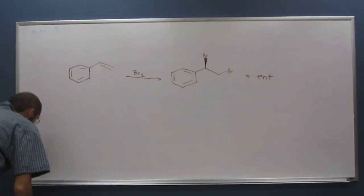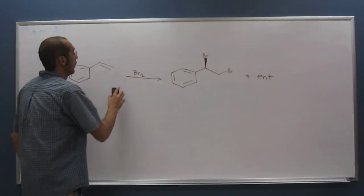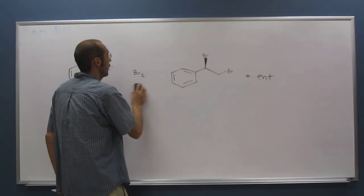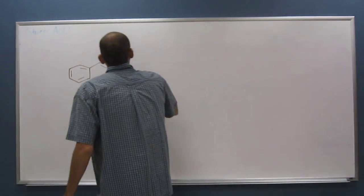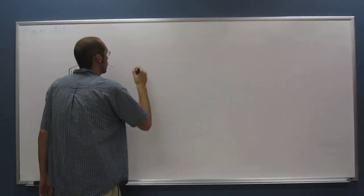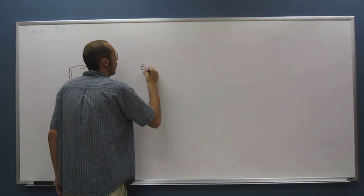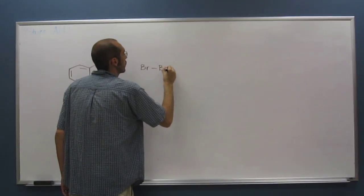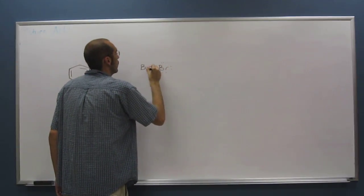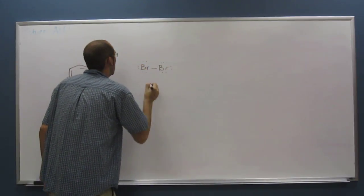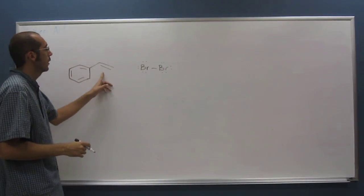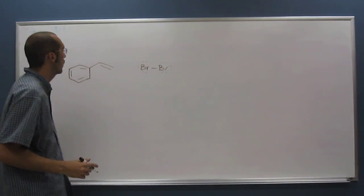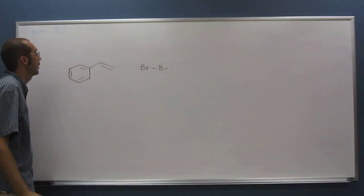So let's just go ahead and add Br2 to this thing. Remember the Lewis structure for Br2. Okay, so you've got the double bond here and Br2, so you can have this electrophilic addition.